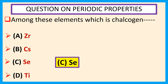and polonium, are called chalcogens because many metals are found in nature as oxides and sulfides, and a few as selenides and tellurides.